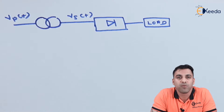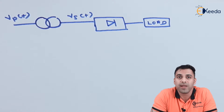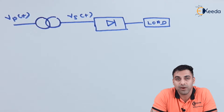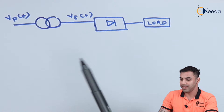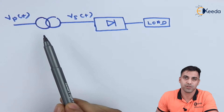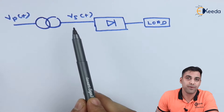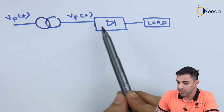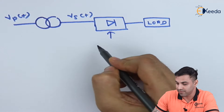Remember, the rectification process is done only with the help of diodes. We will be discussing how a diode can convert an AC voltage to a DC voltage. In this diagram, V_P is the peak voltage — any sinusoidal voltage — and V_S(t) is the sinusoidal or AC voltage. This is the symbol of rectification.